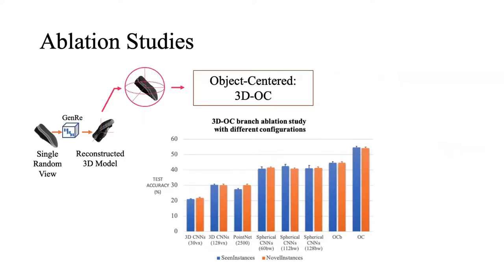For the first branch, we have evaluated different network structures that are commonly used for 3D recognition tasks. Note that the input shape is only a partial estimation, and it's not perfect. We show that our OC branch outperforms other baselines by a large margin on the MIRO dataset.